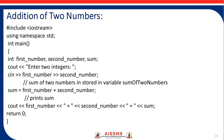The last statement is return 0, because the main function is of integer type, so we return an integer value — return 0.